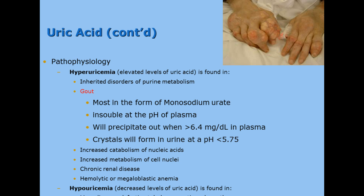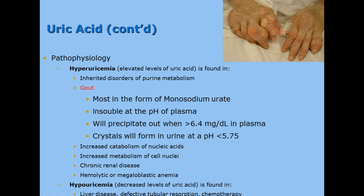On the other side of the spectrum, hypouricemia can be found in things like liver disease, defective tubular resorption, and chemotherapy.